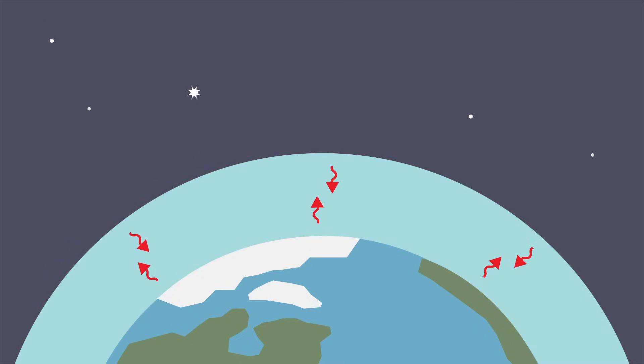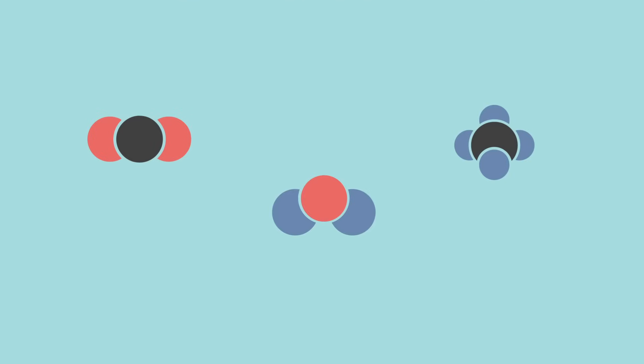After the sun goes down, Earth's surface cools. This releases heat back into the air. But some of that heat is trapped by the gases in the atmosphere. These heat-trapping gases are called greenhouse gases.